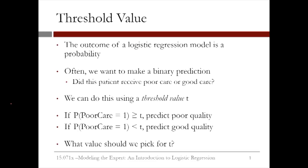We saw in the previous video that the outcome of a logistic regression model is a probability. Often, we want to make an actual prediction. Should we predict 1 for poor care, or should we predict 0 for good care? We can convert the probabilities to predictions using what's called a threshold value, t. If the probability of poor care is greater than this threshold value t, we predict poor quality care. But if the probability of poor care is less than the threshold value t, then we predict good quality care.